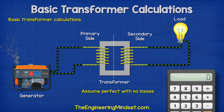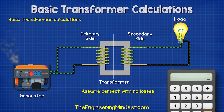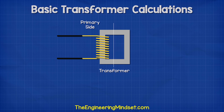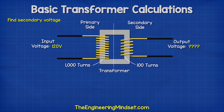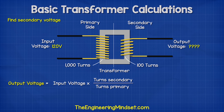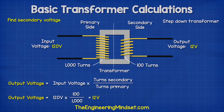Let's run some basic calculations for transformers, assuming it is perfect with no losses. If we had a transformer with 1000 turns on the primary and 100 turns on the secondary, and we supplied it with 120 volts, what voltage would we see on the secondary side? We can use this formula to find that out and we see the answer is 12 volts. So this is a step-down transformer.